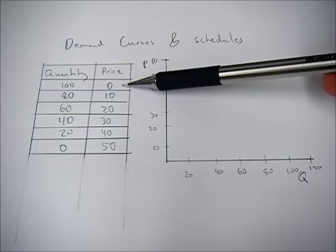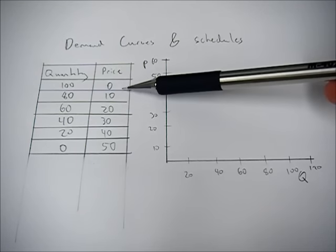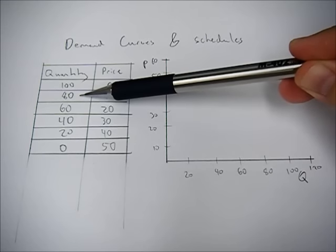So, for example, if the price is zero, we're going to demand 100 of those things. If the price goes up to 10, we only demand 80.